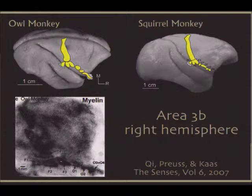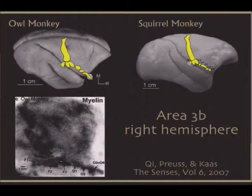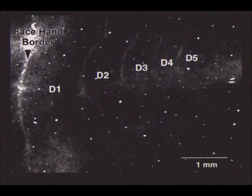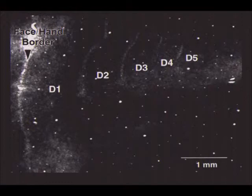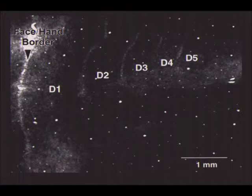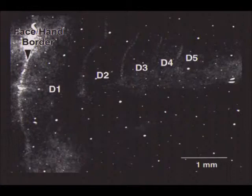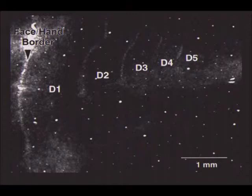In a macaque monkey the hand area is most pronounced, and you can also see it in New World monkeys. There's a line separating each of the digits, with all digit territories lined up and apparent. When you record, all neurons in the D1 territory respond to digit 1, and so on. Interestingly, if you do an experiment with sensory loss and cortex reorganizes so these territories respond to something new, those physical subdivisions — those septa — remain for life. That doesn't change, even if the physiology does change.